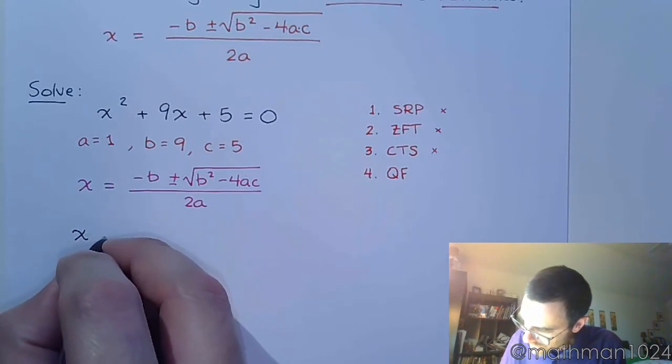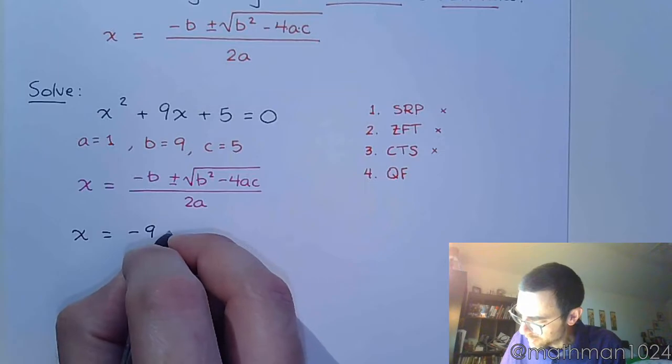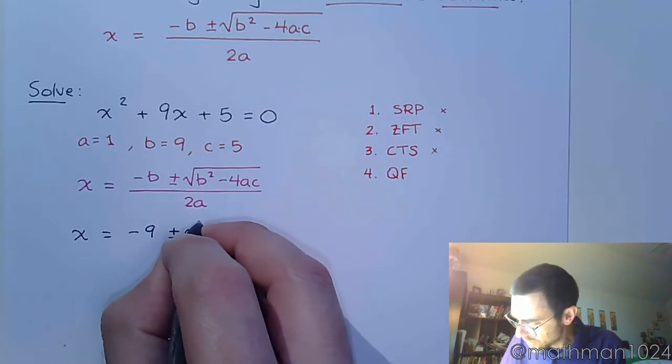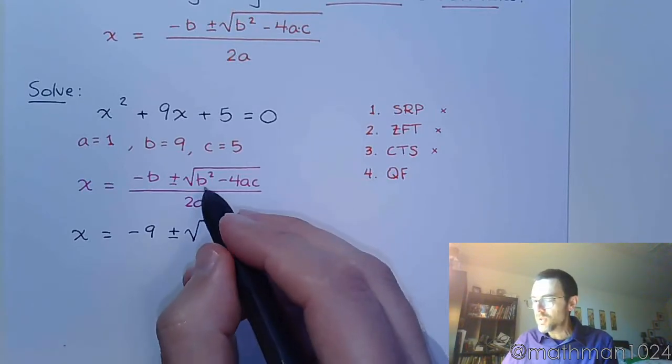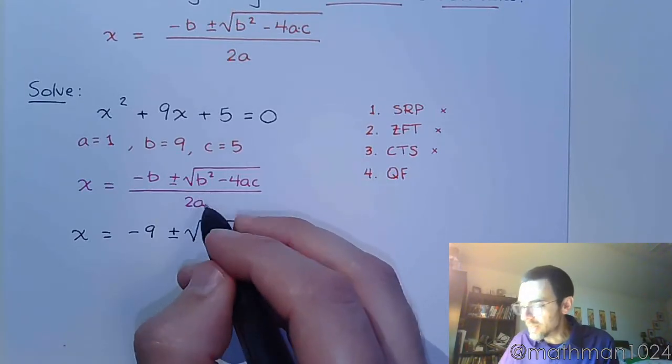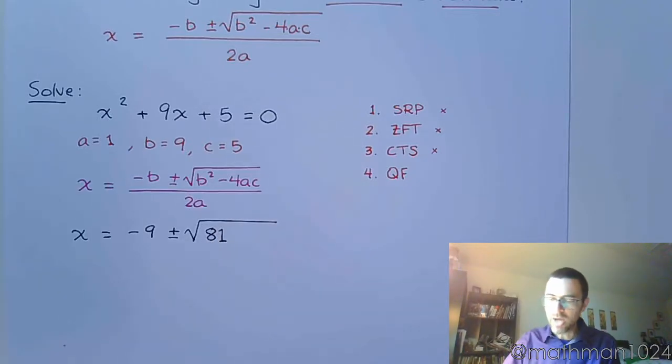So x is equal to negative 9 plus or minus the square root of what? So it's b². So since b is 9, b² is 81 minus 4ac.